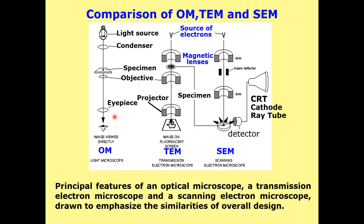In an optical microscope we view the image directly, while in TEM the image is formed on a projection screen. In the case of SEM, a CRT (cathode ray tube) linked to a computer screen displays the detailed image. So whereas an optical microscope gives a direct image visible by eye, in TEM and SEM image formation is visualized with the help of a computer screen.